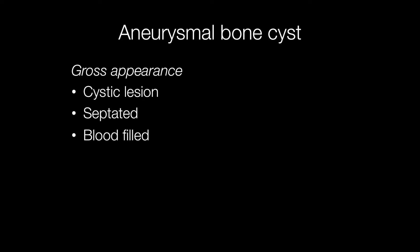Grossly, they are cystic lesions that are septated and in areas blood filled. This is the gross appearance of an aneurysmal bone cyst. You can see there are cysts, one of the cysts is blood filled, and the lesion is septated.